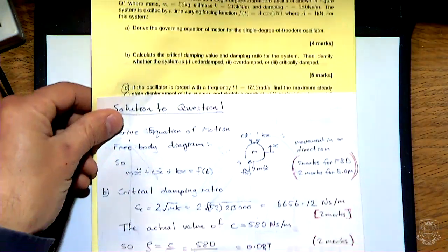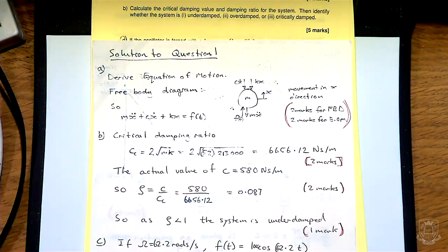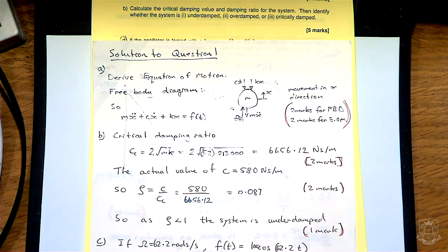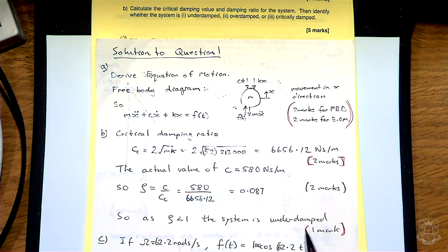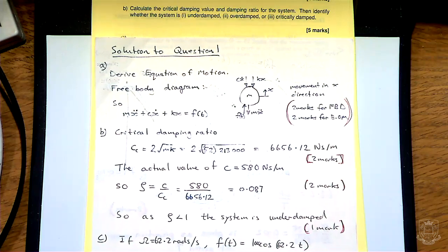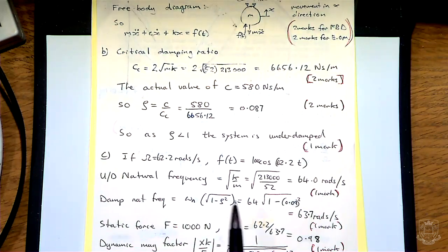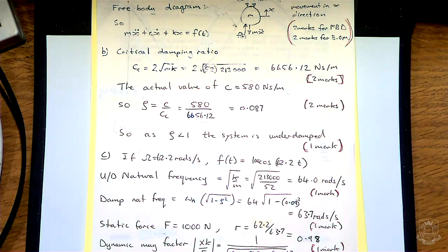We're nearly always dealing with underdamped systems because they're the ones that have oscillations, so it would be surprising if it wasn't underdamped. You're asked to explicitly state that it's underdamped. Now we move on to Part C — 11 marks out of the total are for this part, so there's quite a lot more work. This part relates to the forced vibration of the system — the oscillator is forced with a frequency of 62.2 radians per second.